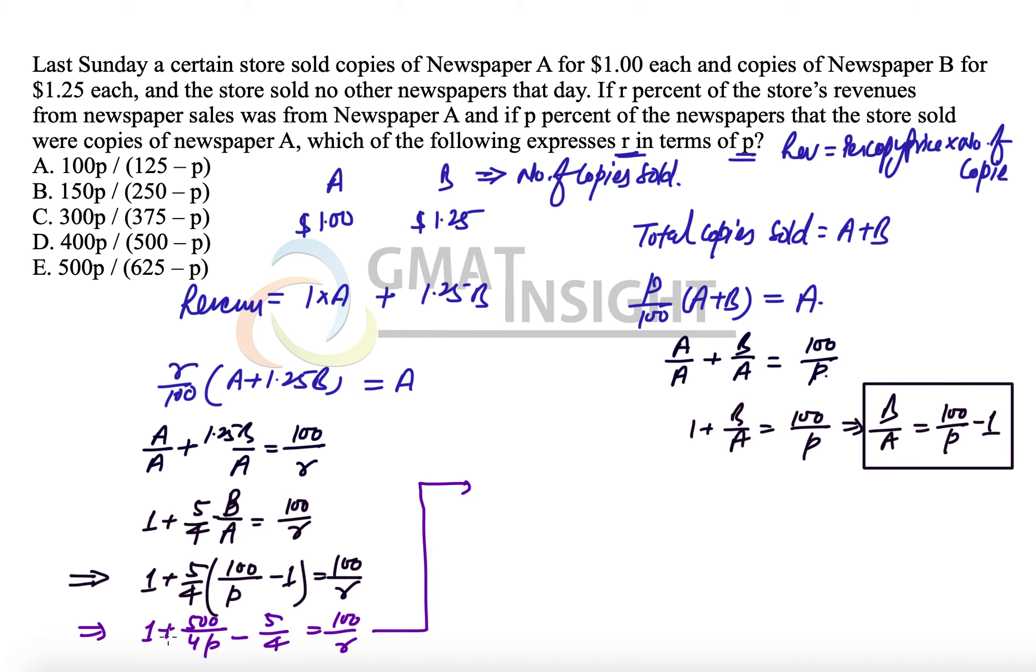Simplifying once again, 1 minus 5 by 4 becomes 500 over 4P minus 1 over 4 equals 100 over R. I'm taking the LCM here, which will be 4P. The numerator will be 500 minus P, equal to 100 over R.